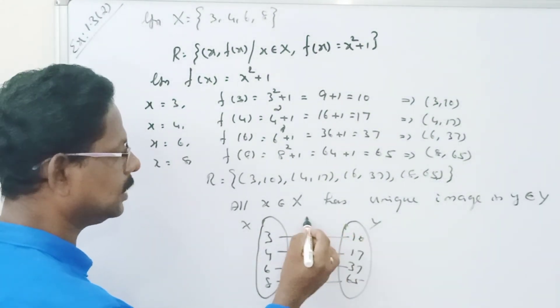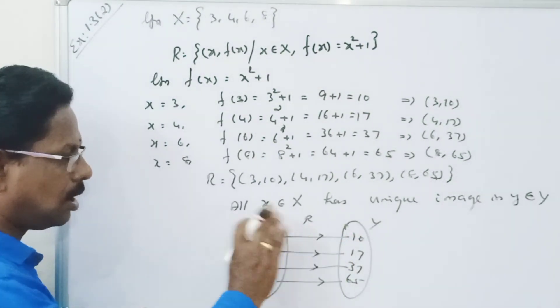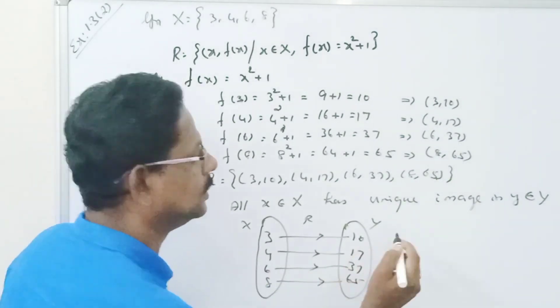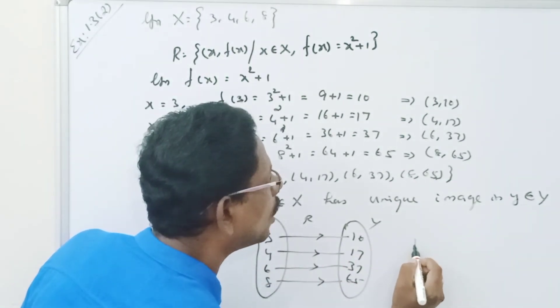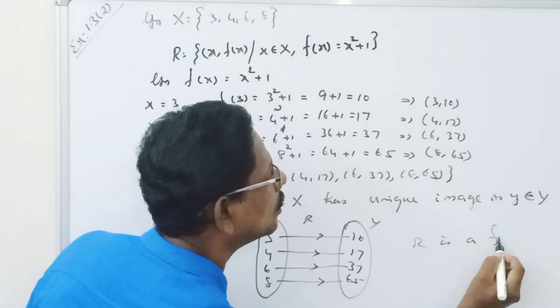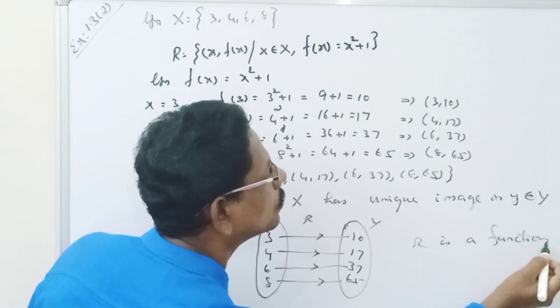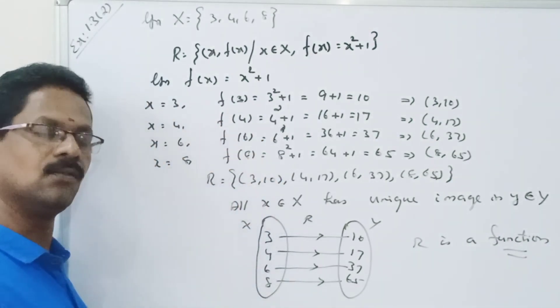This is X, this is Y, this is the relation. All the elements have images in Y. Therefore, R is a relation, R is a function. Therefore, the relation R is a function.